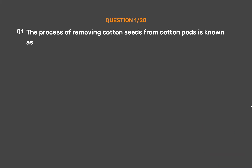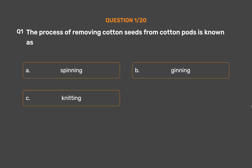Question number 1. The process of removing cotton seeds from cotton pods is known as: Option A, Spinning; Option B, Ginning; Option C, Knitting; Option D, Weaving.